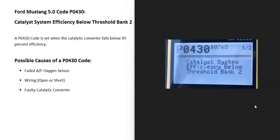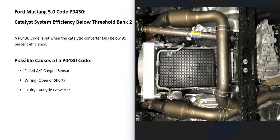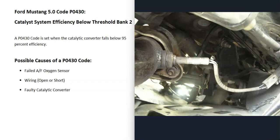If you have a Ford Mustang 5.0 and you get a P0430 code, I'll go over how you go about fixing it. A P0430 code is listed as 'catalyst system efficiency below threshold bank 2.' This means one of the O2 sensors is reporting to the computer that the catalytic converter on bank 2 has fallen below 95% efficiency. But this doesn't necessarily mean the catalytic converter has failed — a bad oxygen sensor reporting bad information could cause the computer to think there's an issue when there isn't.